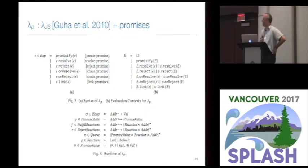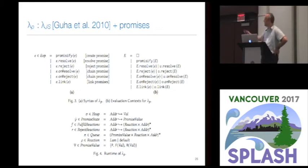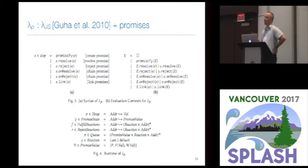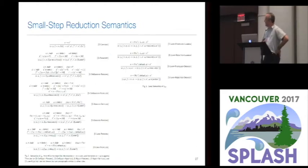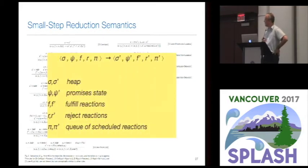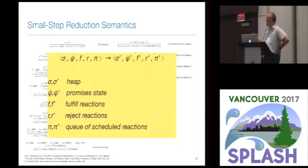We decided to focus on a core subset. The model we based our semantics on is Lambda.js by Arjun Guaha and colleagues. We made a small addition to Lambda.js with features for creating a promise, for resolving and rejecting a promise, for adding a resolve or reject reaction — equivalent to then and catch — and a link operation to handle the case where one promise is linked to another. We have a small-step reduction semantics that is essentially a one-step relation that transitions a heap to a new heap, an old promise state to a new promise state, updates the sets of fulfill and reject reactions, and keeps track of a queue of scheduled reactions.